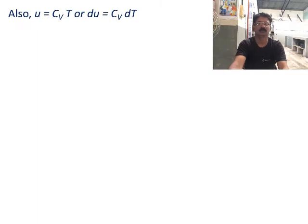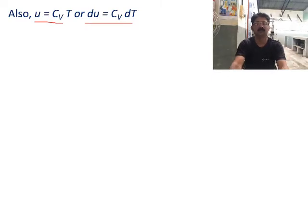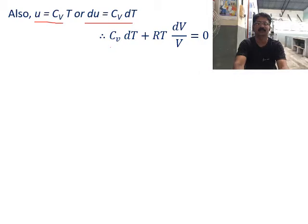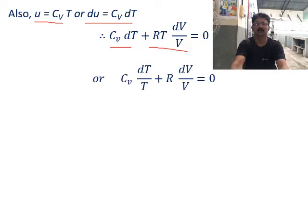Also, U equals CV times T — that is, internal energy is a function of temperature — and the change in internal energy is DU equals CV times DT. Substituting DU as CV DT in the above expression: CV DT plus RT times DV by V equals zero. Dividing by T: CV times DT by T plus R times DV by V equals zero.